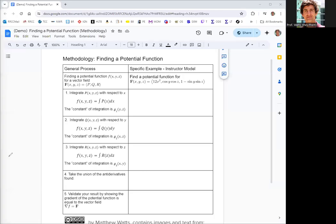All right, in this video, we're going to see how to find a potential function for a vector field. So we're given a three-dimensional vector field f, and first component function is 12x squared. The second component function is cosine y cosine z, and the third component function is 1 minus sine y sine z.